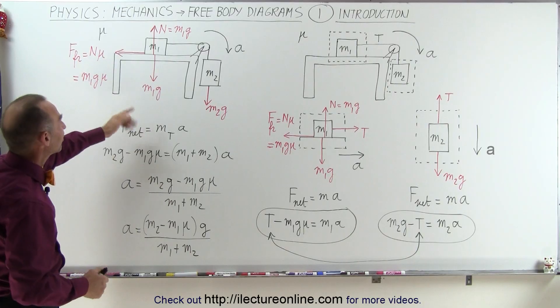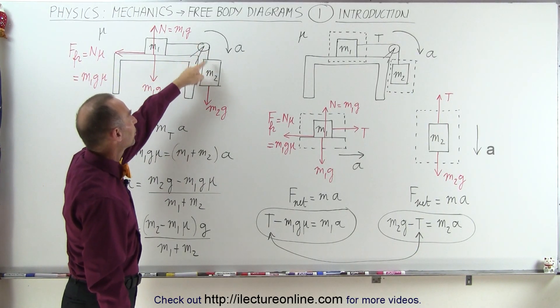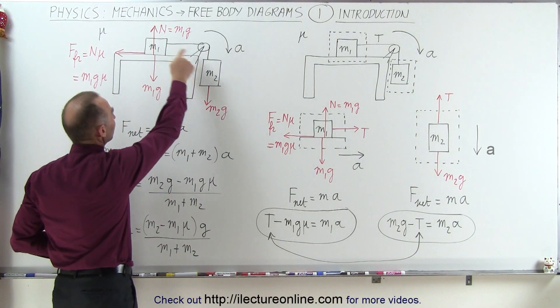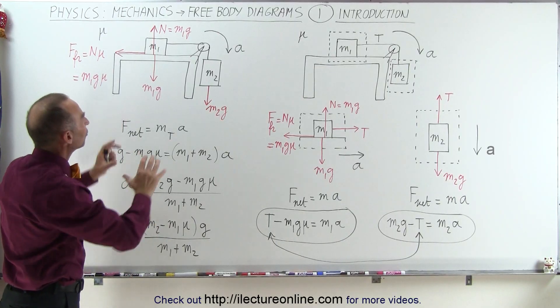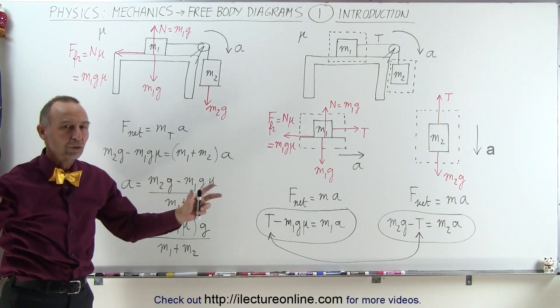So here we have a simple example where we have two masses, one sitting on the table and the other one hanging from a pulley right here, connected by a rope that goes over a pulley. The method that we typically use is we look at this as a whole system and we only consider the forces, external forces, acting on the system.